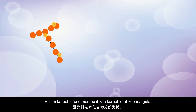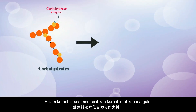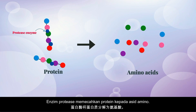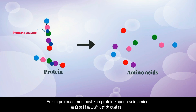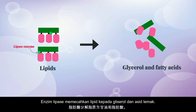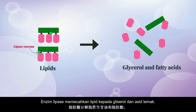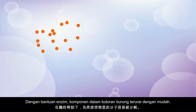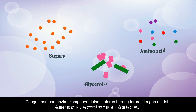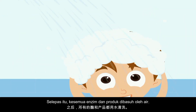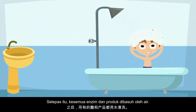Carbohydrase enzymes break down carbohydrates into sugars. Protease enzymes break down proteins into amino acids. Lipase enzymes break down lipids into glycerol and fatty acids. With the help of enzymes, the components of the bird poop are disassociated easily, and after that all the enzymes and the products are washed away by water.